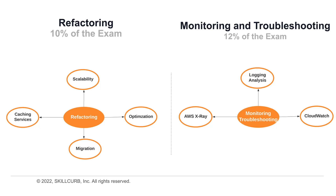Key areas of focus for refactoring are optimization, migration, caching services, and scalability. For monitoring, you need to know CloudWatch, AWS X-Ray, and analysis of logging. Let's get this party started — good luck!